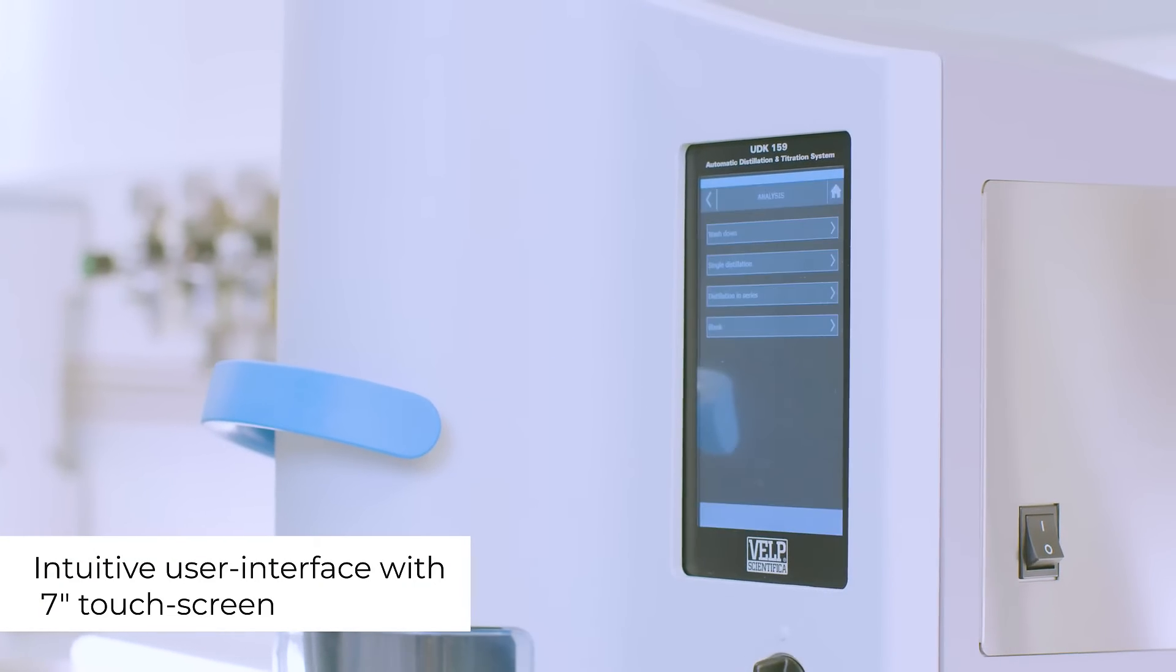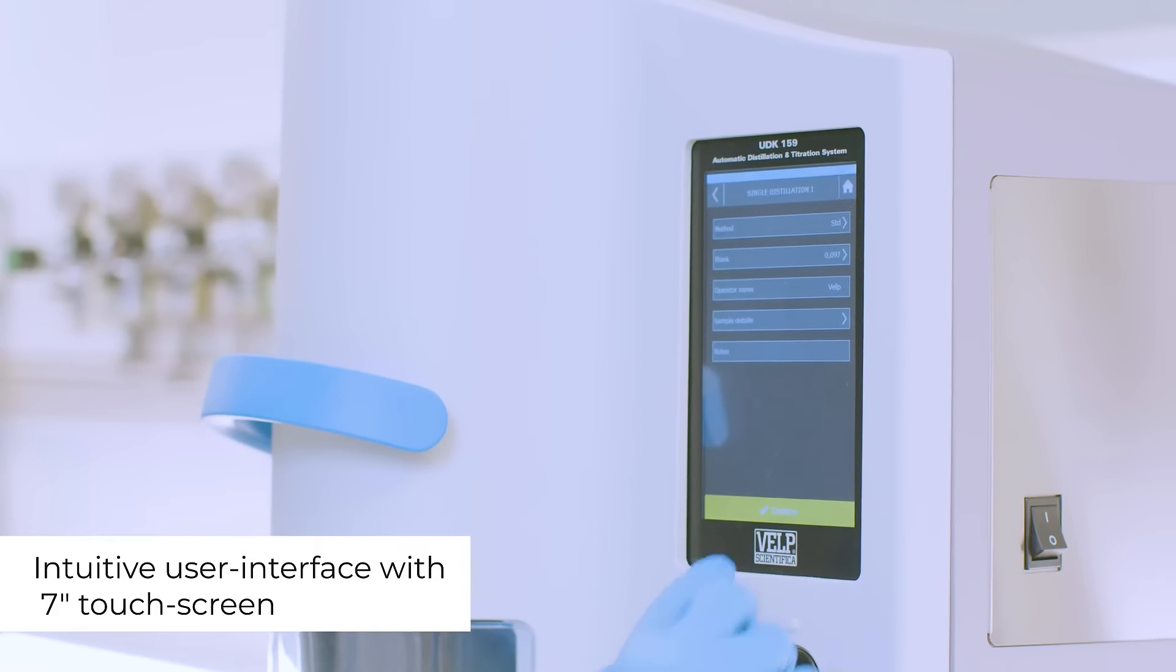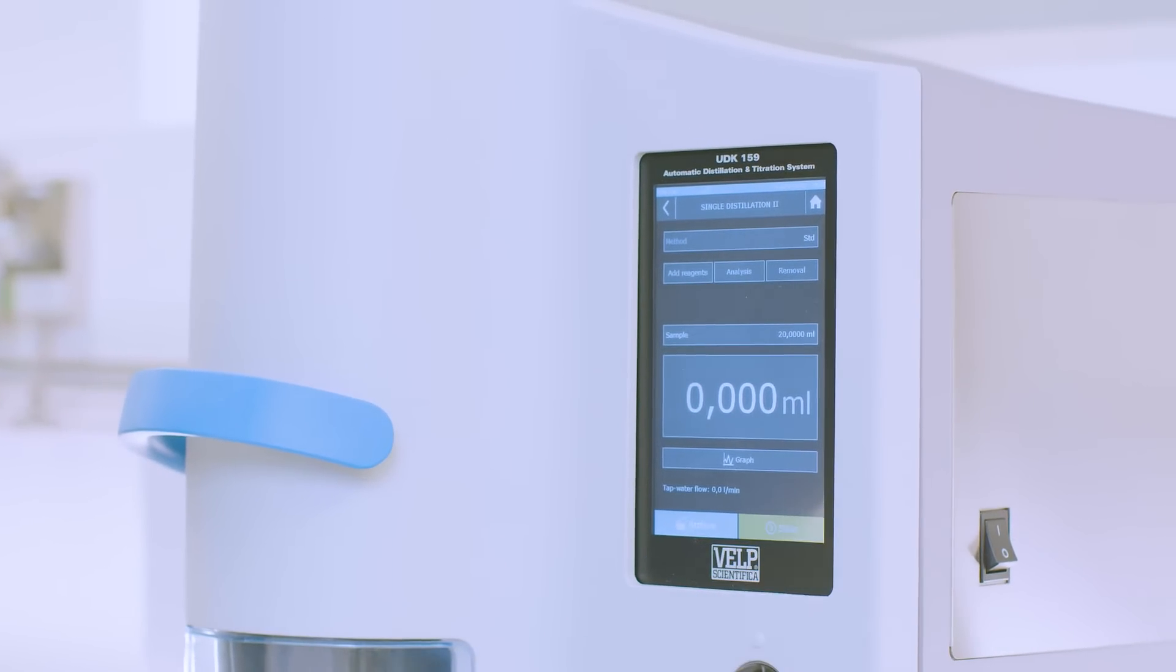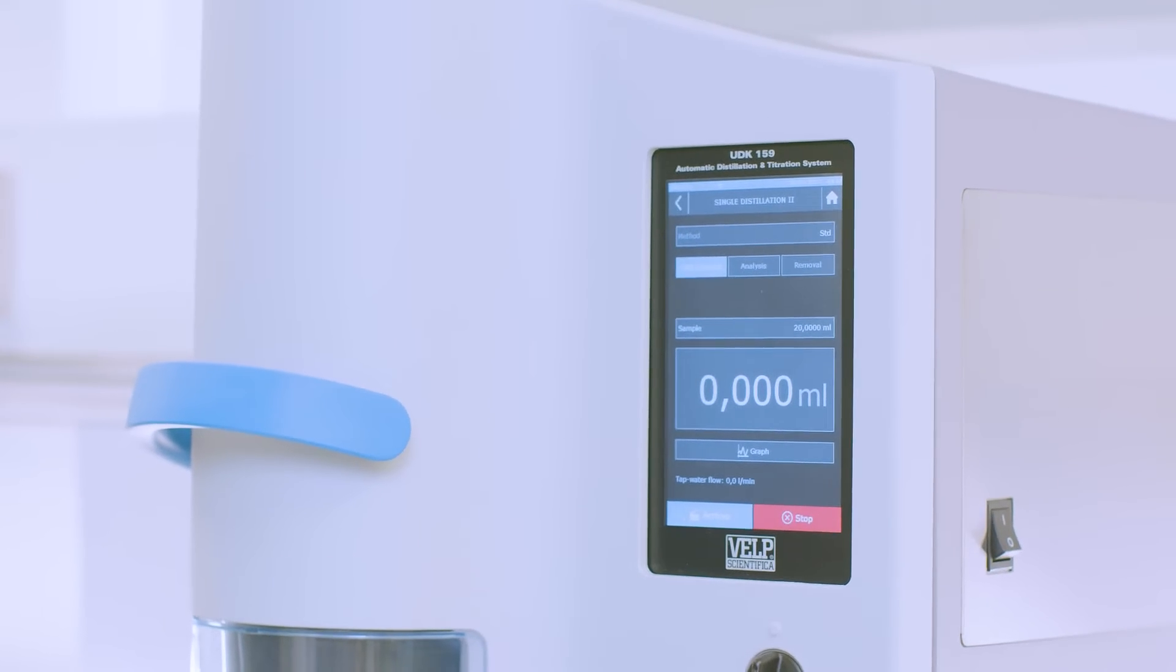The intuitive user interface and the bright 7-inch touchscreen make the UDK-159 a smart and easy-to-use analyzer, ensuring full traceability of data.